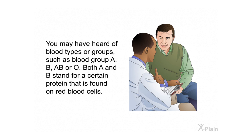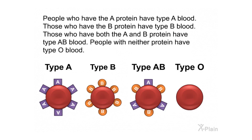You may have heard of blood types or groups, such as blood group A, B, AB, or O. Both A and B stand for a certain protein found on red blood cells. People who have the A protein have type A blood. Those who have the B protein have type B blood. Those who have both the A and B protein have type AB blood.